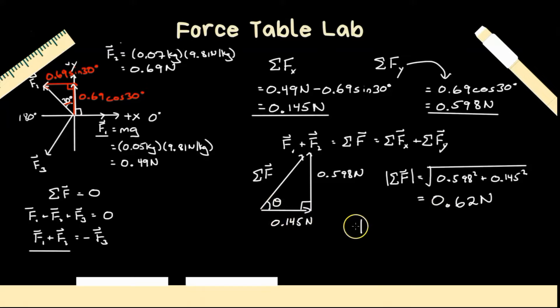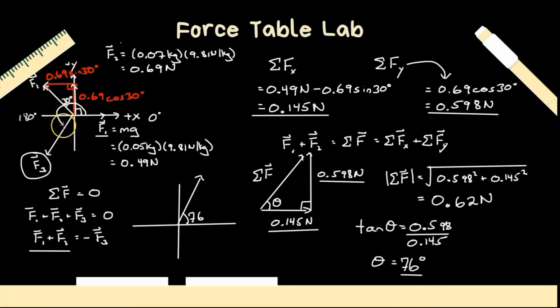All right, and our angle, let's use tangent, so tan theta is going to equal to opposite 0.598 newtons divided by adjacent 0.145. And you take the inverse tan of both sides, and we can get our angle to be about 76 degrees. All right, so let's look at our angle. If this, let me redraw a coordinate system here. 76 degrees looks something like this, that's 76 degrees. To figure out this angle for F3, which would be from here all the way around, we just need to add another 180 degrees. So on our force table, the angle that we should get would be 180 plus 76, which is 256 degrees.